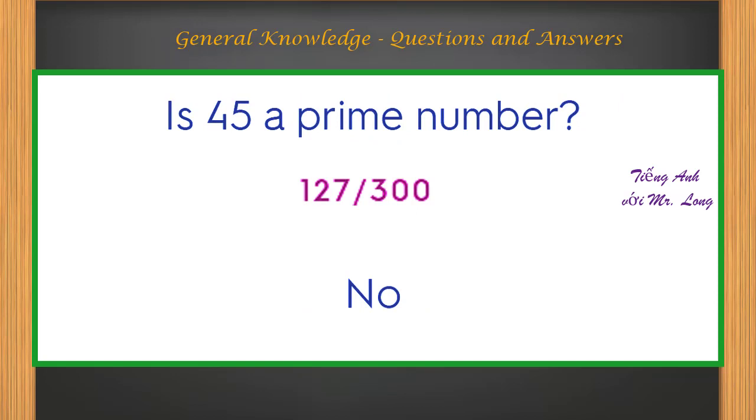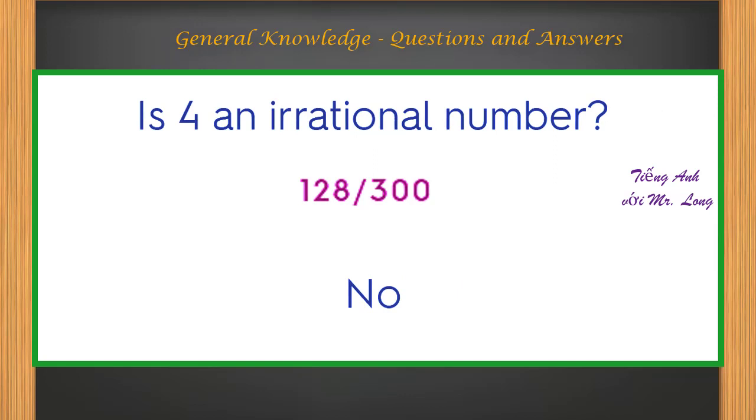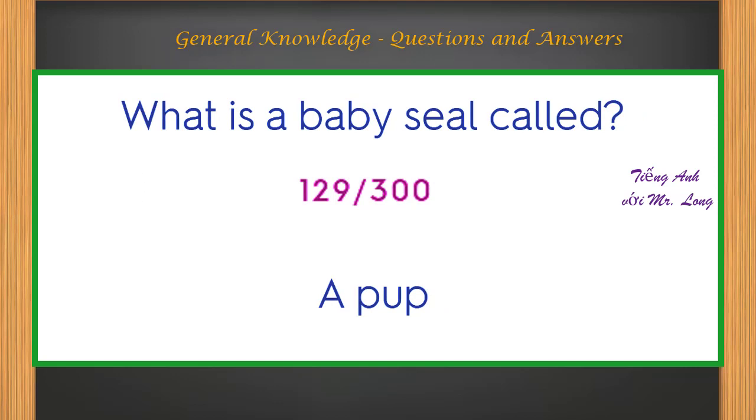Is 45 a prime number? No. Is 4 an irrational number? No. What is a baby seal called? A pup.